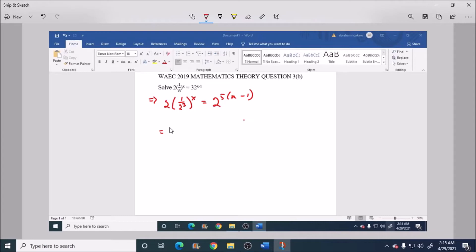Then bracket equals to 2 to the 5 into x minus 1. This is the same thing as saying 2 into 2 into minus 3x equals to 2 to the 5x minus 1.